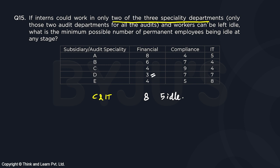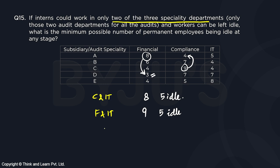If the two speciality departments are finance and IT, then a maximum of nine permanent members work in compliance. When working in subsidiary A only four are needed, meaning five are idle. Lastly, if finance and compliance are the two departments interns work in, we have eight permanent members working in IT. But when working for subsidiary B or C, only four of them are needed, so the remaining four are idle.